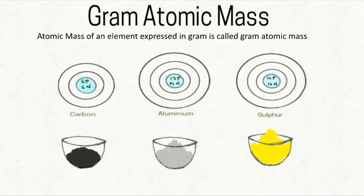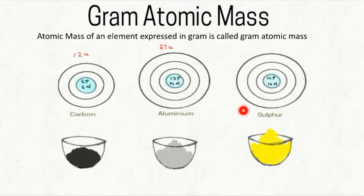You will be knowing how to express the mass of an atom in atomic mass unit. What is the atomic mass of carbon? That will be 12 amu, or 12 units. What about the atomic mass of aluminum? It will be 27 units. And what about the atomic mass of sulfur? It will be 32 units.